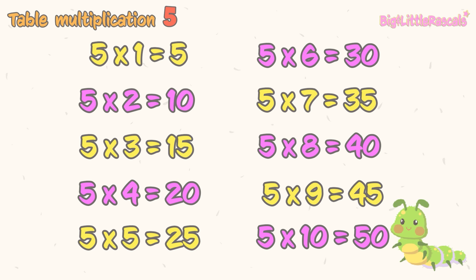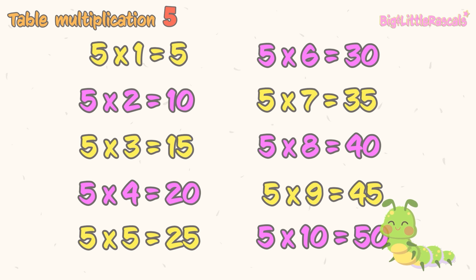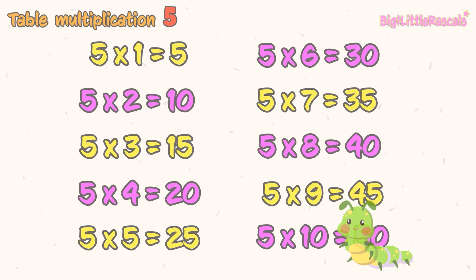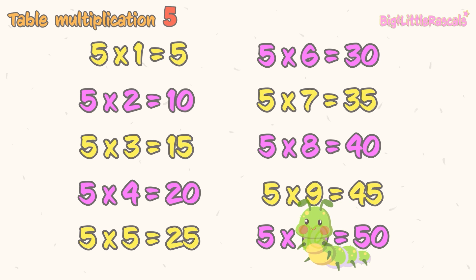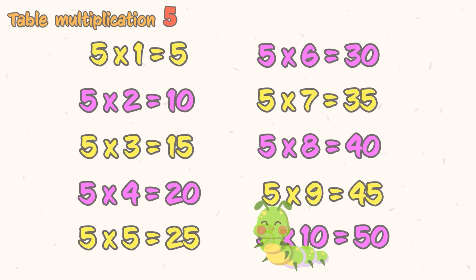Now let's move to multiplication by 5. This time, Jackie the caterpillar is also memorizing multiplication by 5 together with us. Ready? Open a new folder in our mind to save multiplication by 5. Let's do it! Great job, everyone! We have learned up to multiplication by 5 — we are halfway to success!